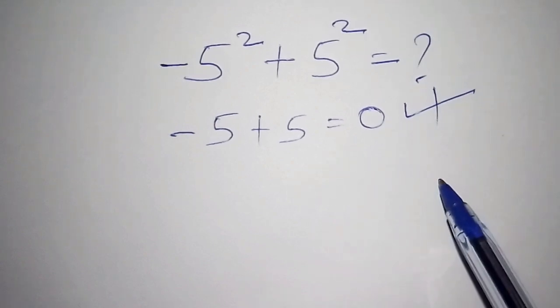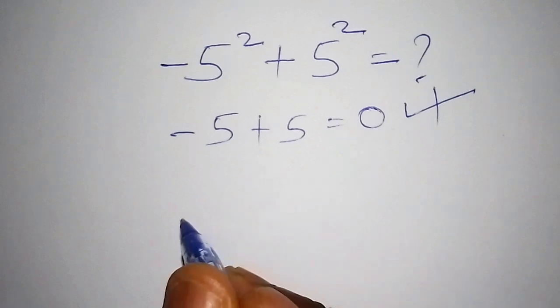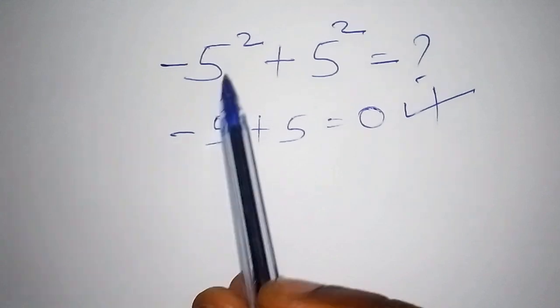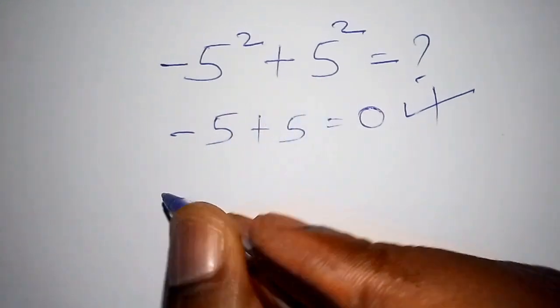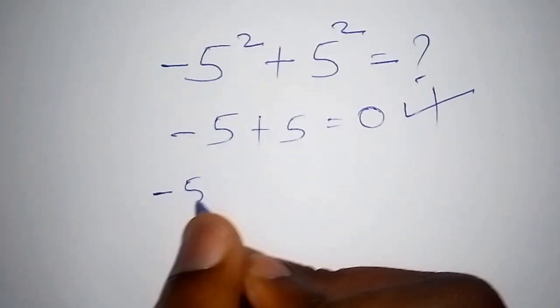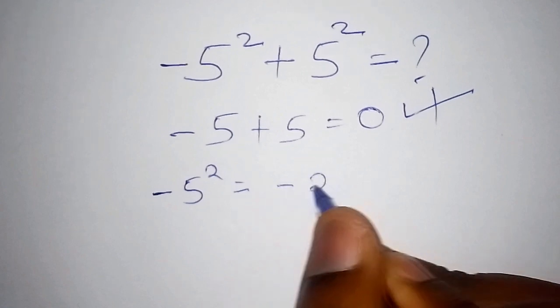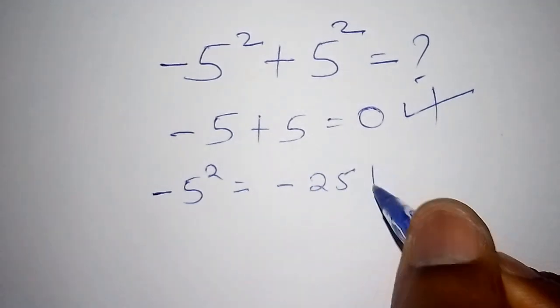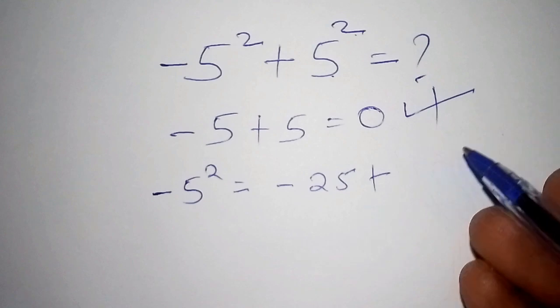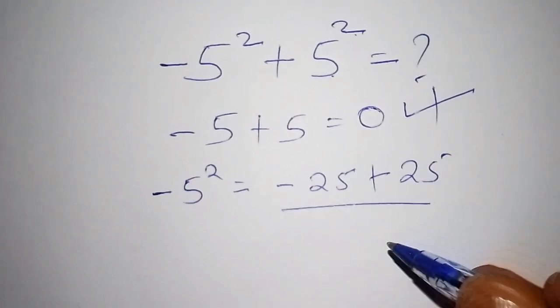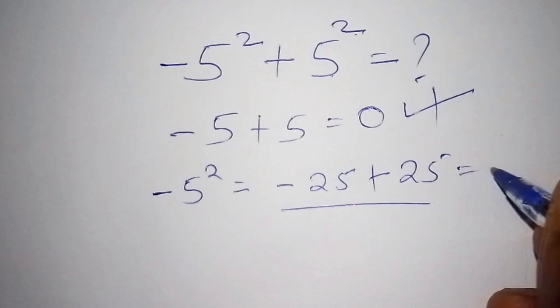There is another one whereby we shall say that since we have minus 5 squared plus 5 squared, then we shall say minus 5 squared becomes minus 25, then plus 5 squared becomes 25, so once we work out this sum, we shall also end up with zero.